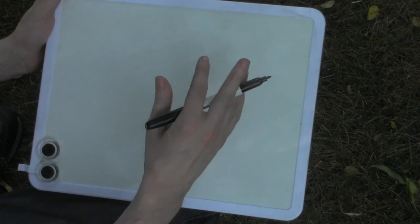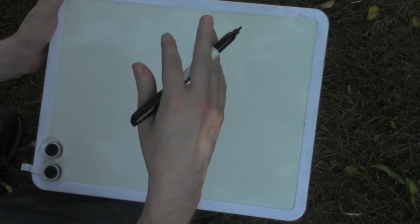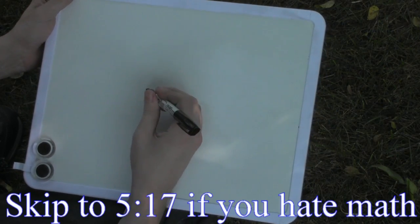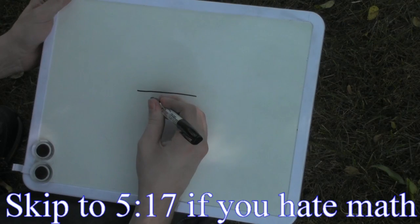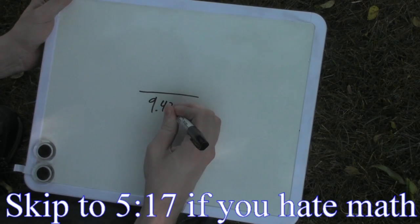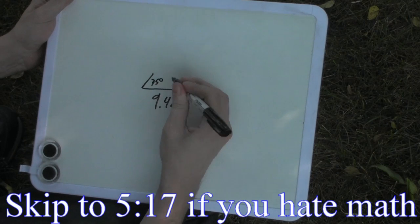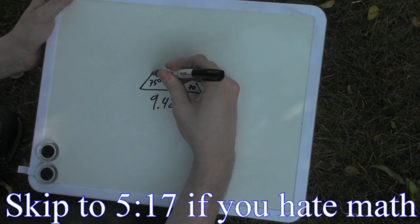All right, so now that we know two angles and a side, we can draw a triangle, just a rough sketch one, and do the math. So what do we have? We have one side at 9.42 feet, we have an angle here at 75 degrees, and an angle here at 70 degrees.